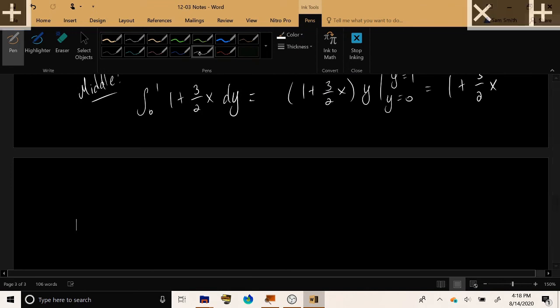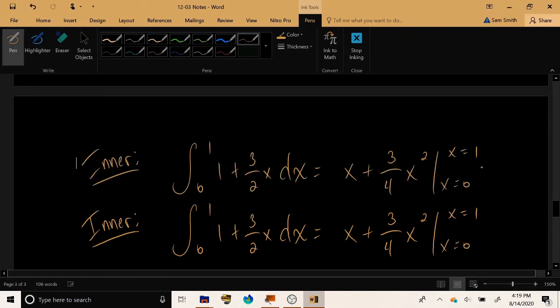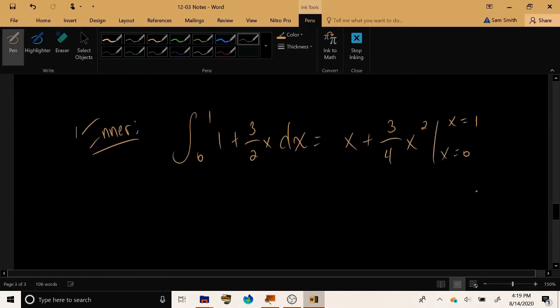And then finally, the outer integral, the integral from 0 to 1 of 1 plus 3 over 2x with respect to x, we get x plus 3 over 4 x squared from 0 to 1. And plugging in 1 and plugging in 0, we get 1 plus 3 fourths, we get 7 over 4.